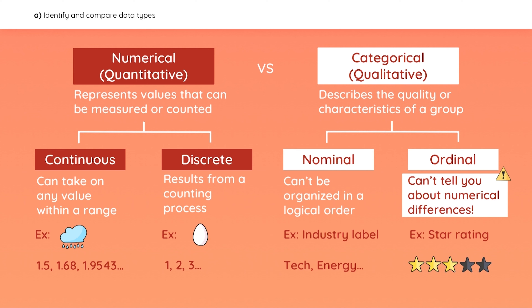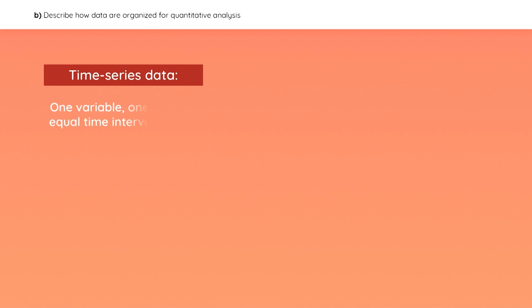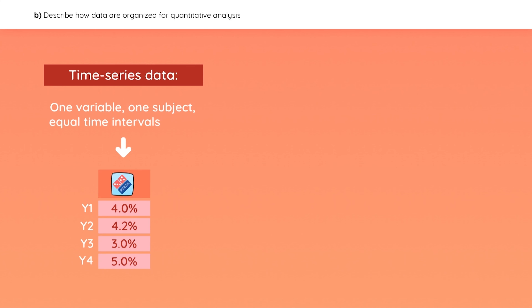We cannot imply that the returns for a two-star fund are twice as good as a one-star fund, and we don't know the difference in the funds' performances based on their number of stars. Depending on how data is collected, it can be classified into three categories. Time series data is when you analyze one variable for one subject at equal time intervals — for example, taking the annual returns for one stock over the last four years.